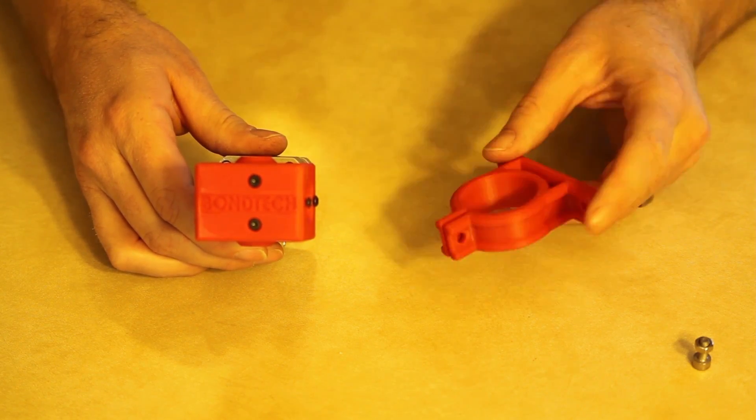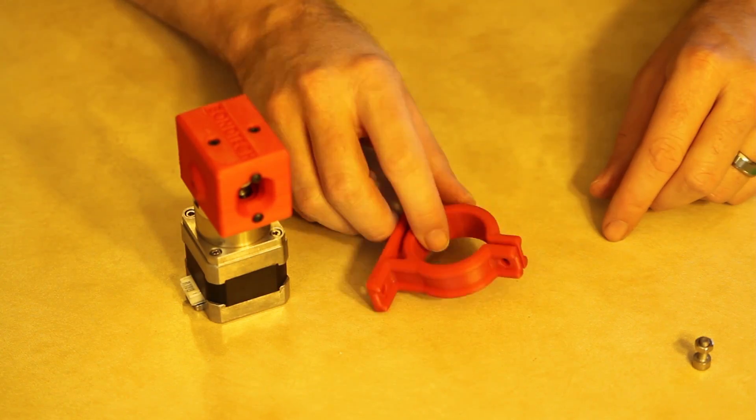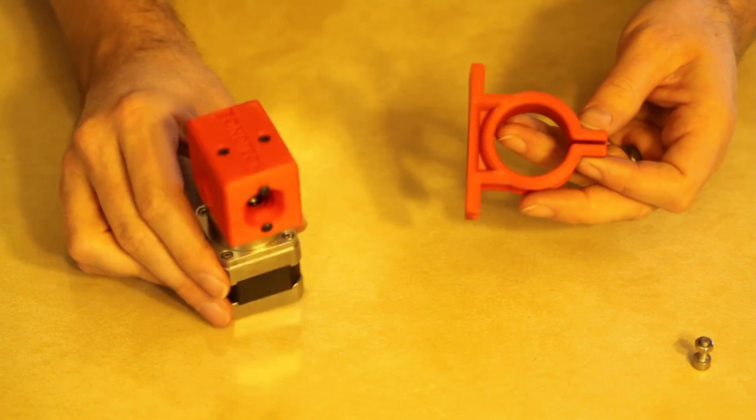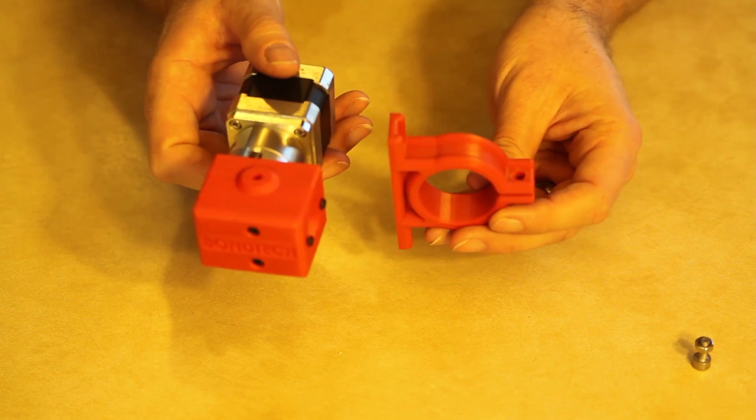This is where I was showing the difference I ran into between bang-bang control on my heated bed and PID. So this is actually the retention piece that allows me to mount this extruder to the frame.